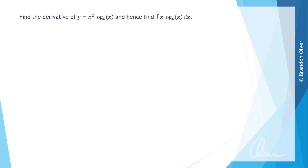Find the derivative of y equals x squared times log e of x, and hence find the integral or anti-derivative of x log e of x with respect to x. To find the derivative of this function, we notice that two functions are being multiplied together, so we can use the product rule for differentiation.